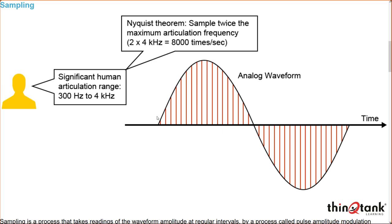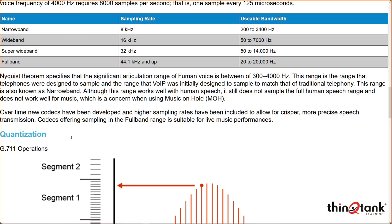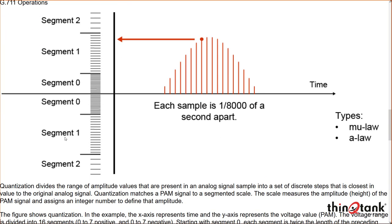Over time, codecs have been developed that operate at higher sampling rates, giving much more precise speech transmission and operating in a full band range — typical for live or digital quality music. But on a phone call, the most important thing is that the message is clear and concise. We're trying to balance the quality of the signal with the amount of bandwidth being generated through the encoding process.